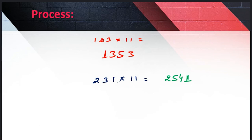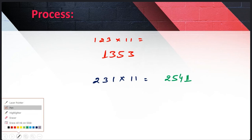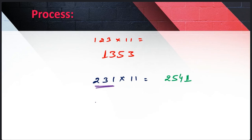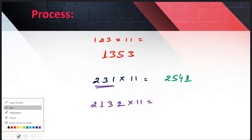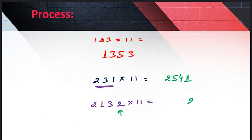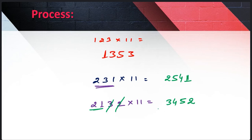Now one more thing — what if the number is four digits instead of three? For example, 2132 multiplied by 11. Look at this — this is a four-digit number. The process remains the same, nothing is different. First we write 2, next is 3 plus 2 equals 5, eliminate and add next two digits: 3 plus 1 is 4, eliminate and 2 plus 1 gives 3, eliminate 1 and the remaining value is 2. So the answer is 23452.